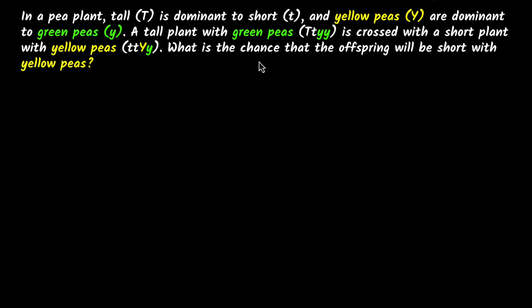There are so many things happening, but if you do it step by step, it'll all make sense. The first thing I like to write always is the genotype of the parents that are being crossed. And that's easy here because it's directly given. So we are given a tall plant with green peas, being crossed with this other plant.